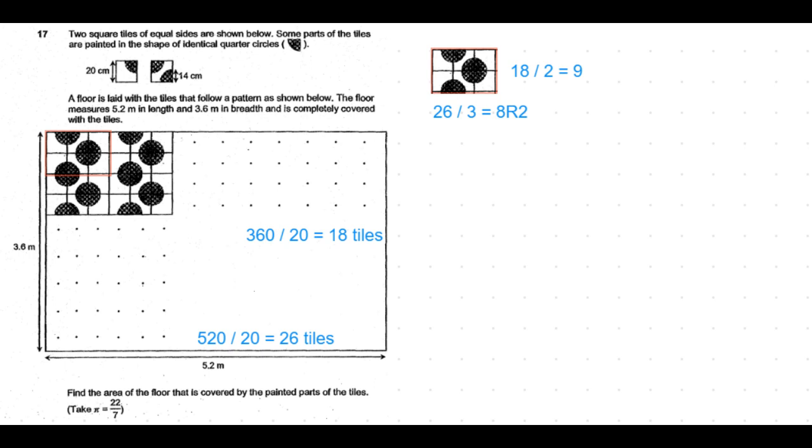What that means is 8 full 6-tile sets can be fit and 2 rows would be vacant, or rather a complete set cannot be fit. Rather, the first 4 tiles alone can be fit.